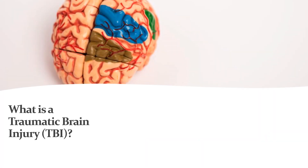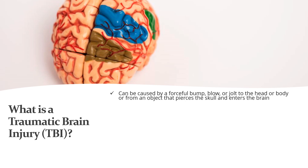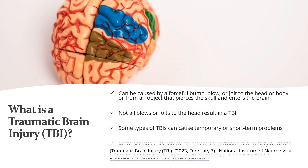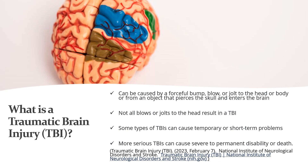A TBI can be caused by a forceful bump, blow, or jolt to the head or body, or from an object that pierces the skull and enters the brain. However, not all blows or jolts to the head result in a TBI. Some types of TBIs can cause temporary or short-term problems. More serious TBIs can cause severe to permanent disability or death.